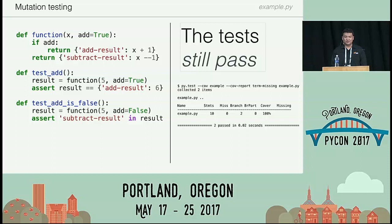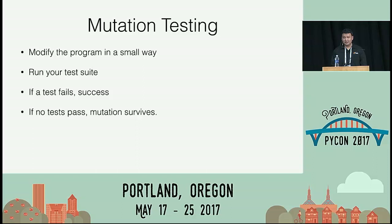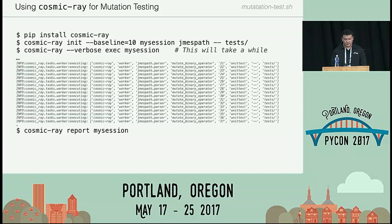This is the motivation for mutation testing. The idea is you take your program and modify it in some small way — usually just one small change at a time — and run your test suite. If all the tests pass after breaking your code, no test told you that you broke it. What you want is: if you change your code in some breaking way, you should get a failing test. The library I use for this is called Cosmic Ray. You pip install it, start a session giving it your code location and test suite, and then run `cosmic-ray exec` with your session name.